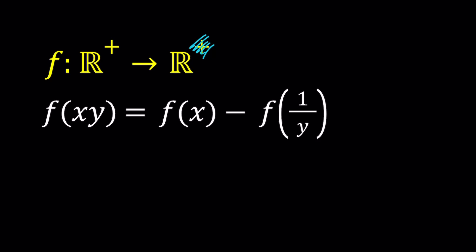And f is defined as f of xy equals f of x minus f of 1 over y. Obviously, you do not want the y value to be 0 here. And that's why we want to go with the positive numbers. And also there's another reason.